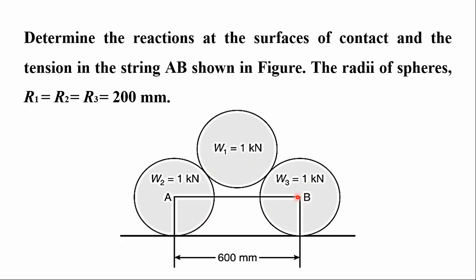Therefore, we have four contact points and four reactions that will be developed. Additionally, there is one cable attached to spheres two and three, so tension will develop in that cable. All of these need to be calculated. To solve this, we will first draw the free body diagram.